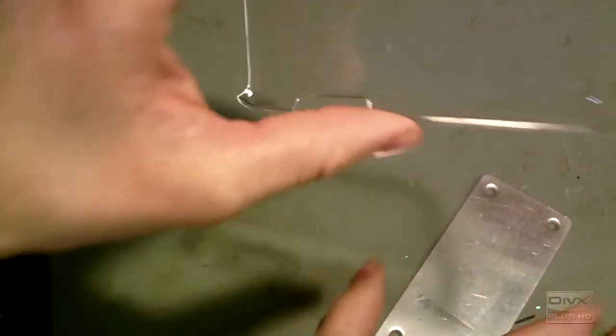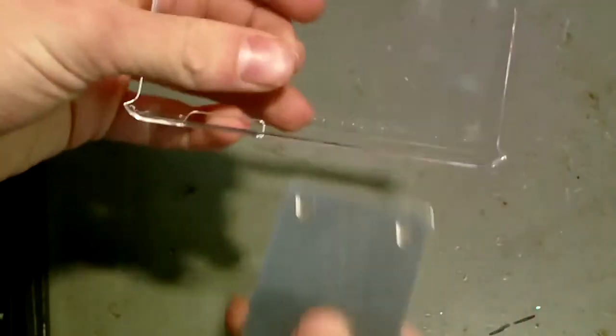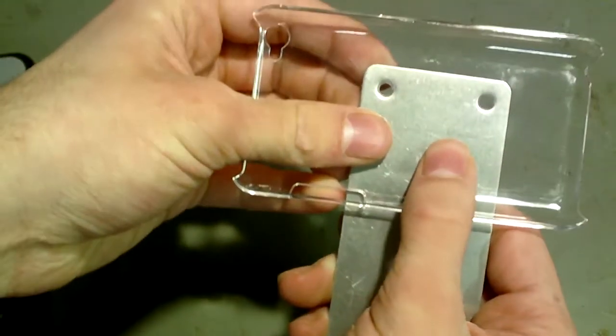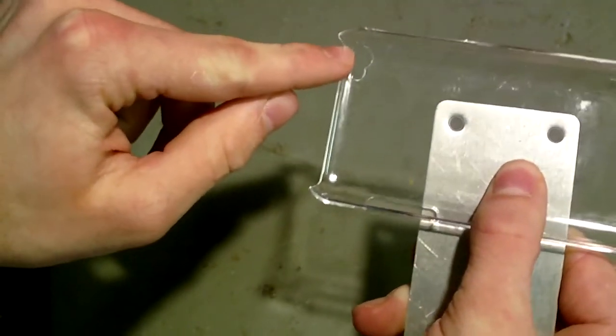First take the case and the piece of metal, and you want to line up the metal so it covers about a third of the case, and make sure the camera is at the top.